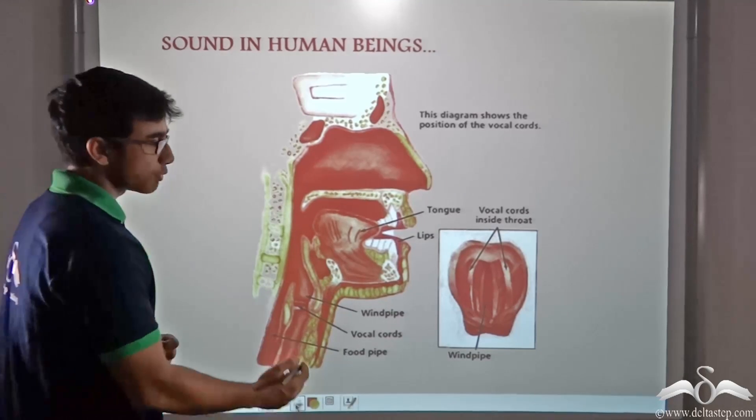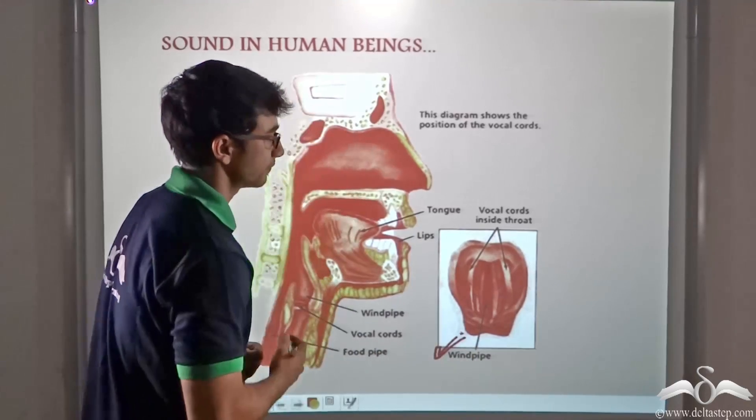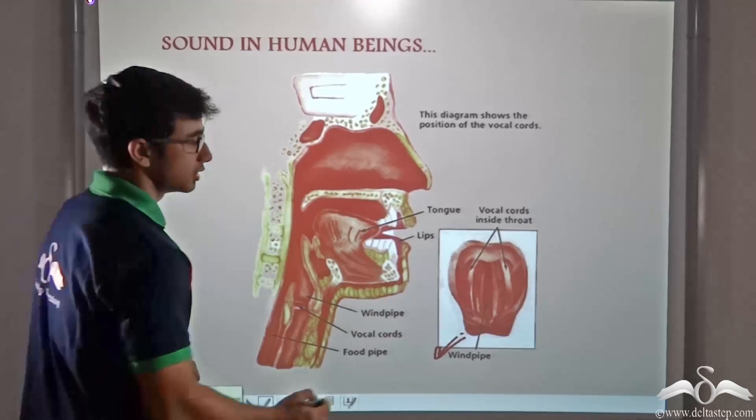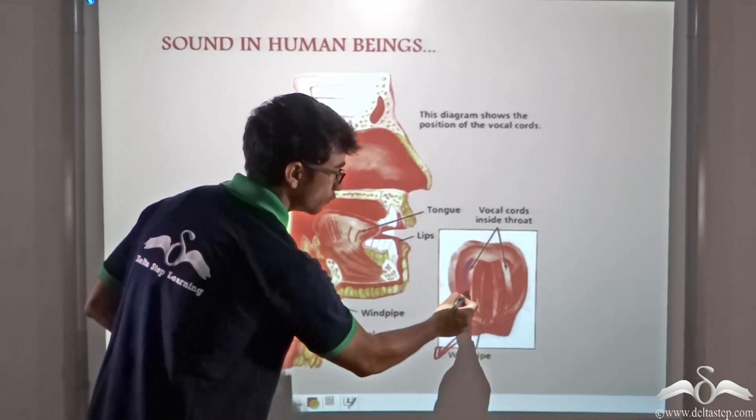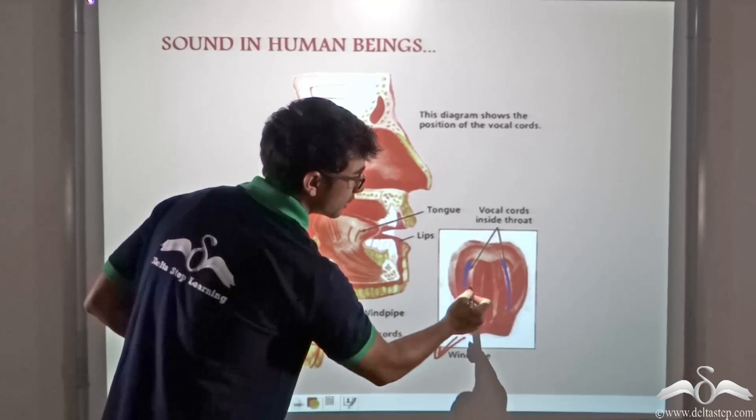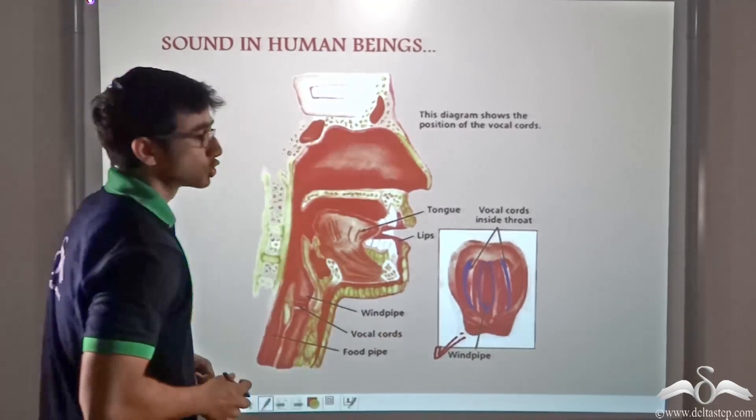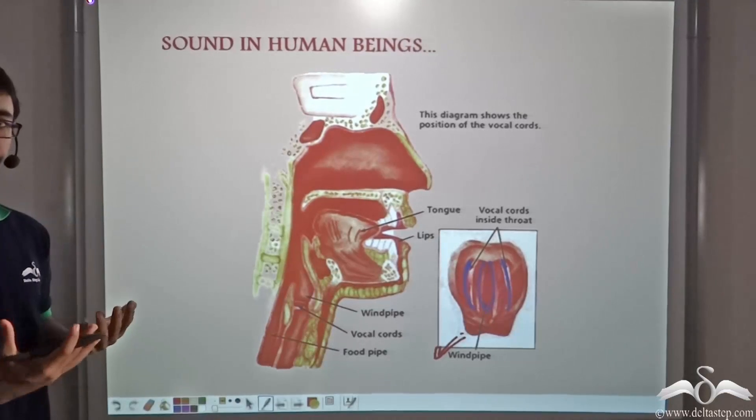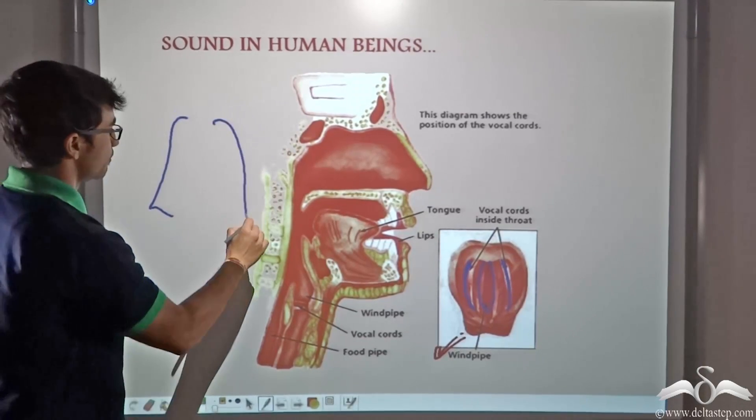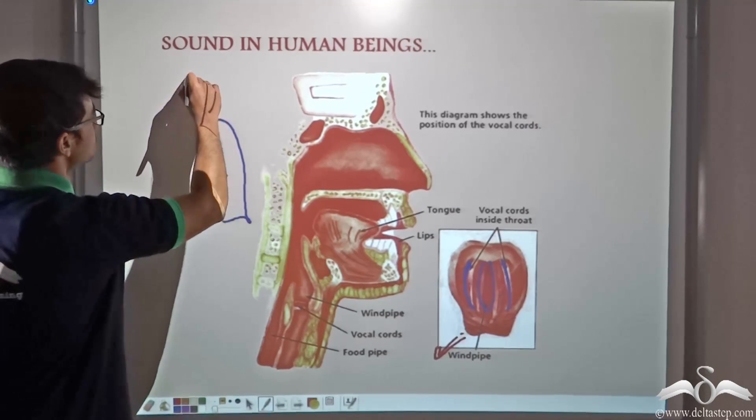The voice box has a structure as is shown by this picture. Over here, you will notice there are two vocal cords. These two vocal cords have a slight slit in between. So when human beings exhale, when you are breathing out, the air passes from your lungs into the windpipe.